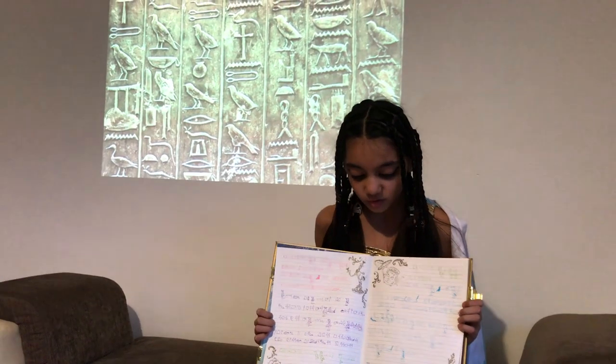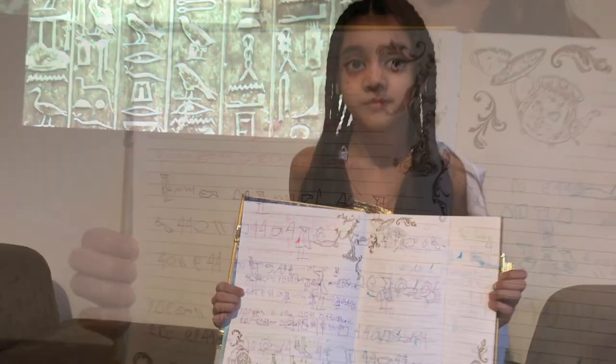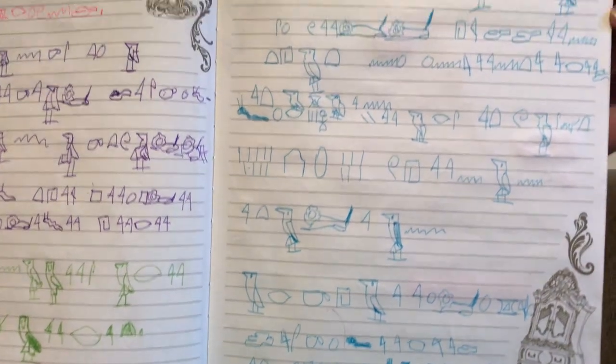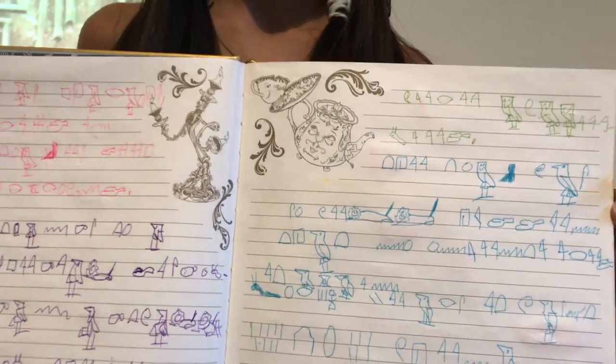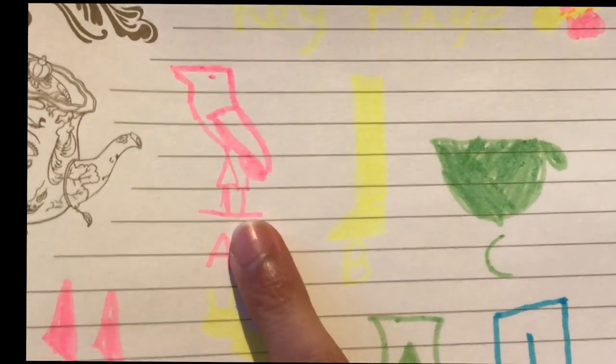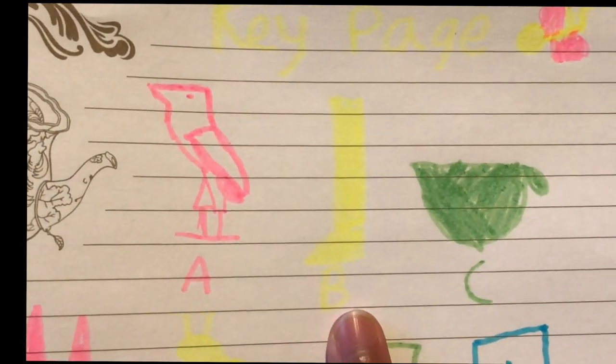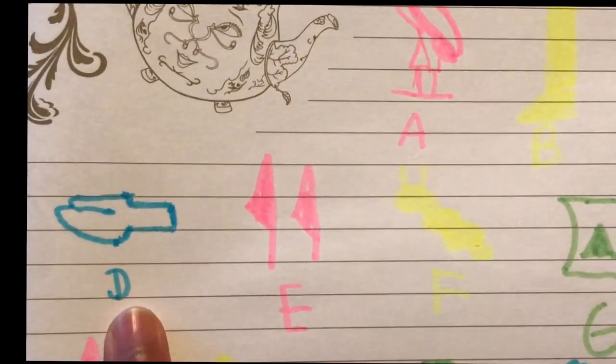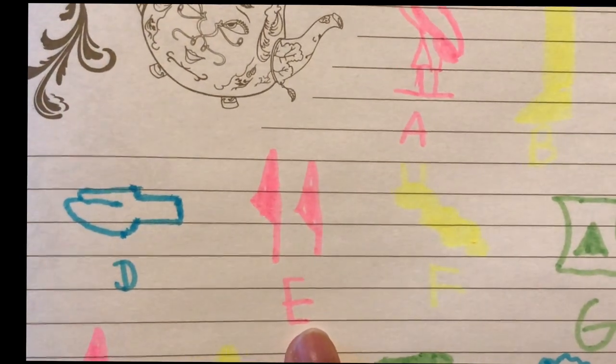This is my practice writing hieroglyphics. A is a vulture, B is a foot, C is a jug, D is a hand, E is two feathers.